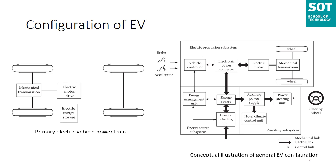The driver uses the brake and accelerator to control the vehicle along with the steering wheel. Based on the control inputs from the accelerator and brake pedals, the vehicle controller provides proper control signals to the electronic power converter in the electric propulsion subsystem. The converter regulates the power flow between the electric motor and the energy source. The backward power flow is due to regenerative braking of the EV, and this regenerated energy can be restored into the energy source — which is why there is a bi-directional arrow shown.